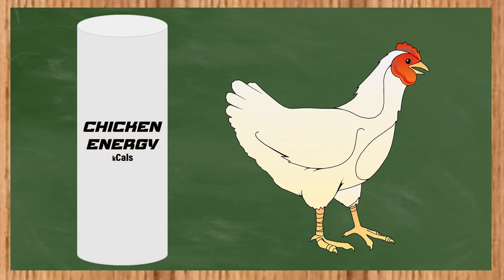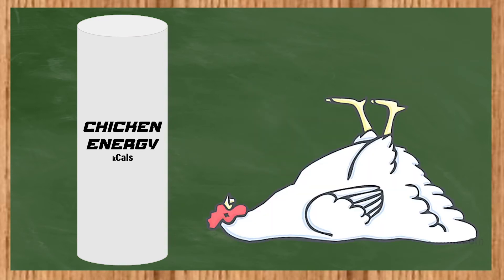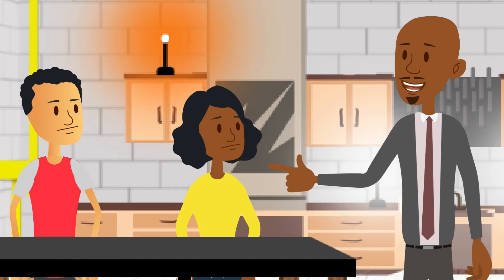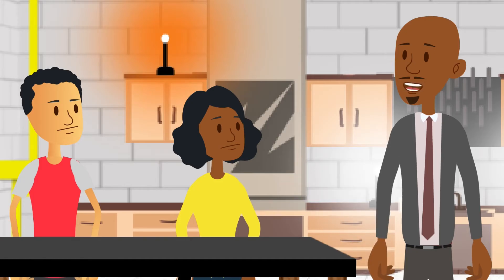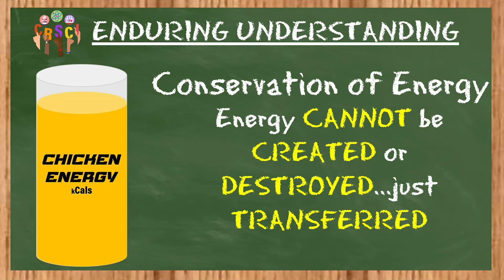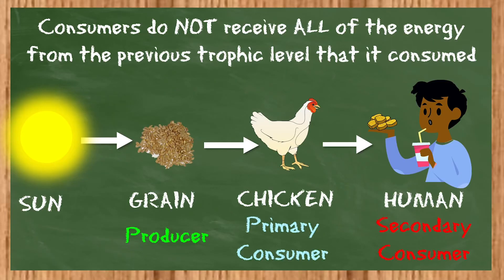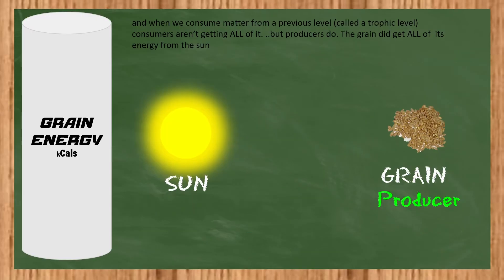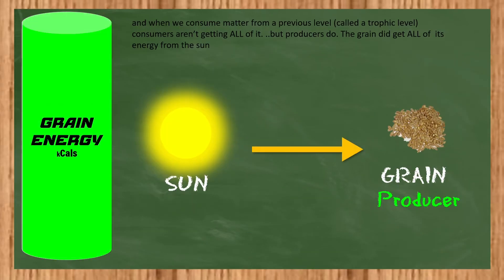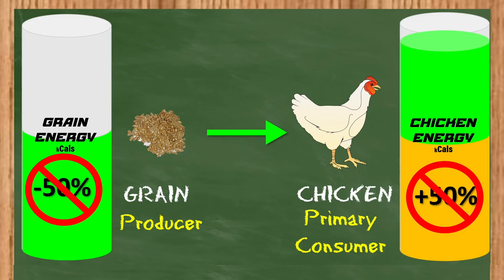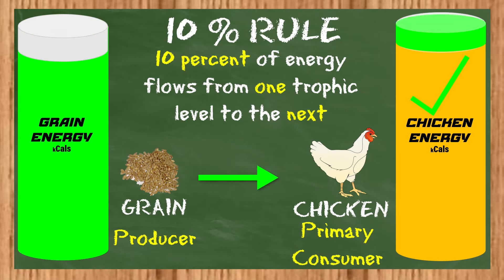If chickens got their energy from the grain and used their energy to live their best chicken life, how are we getting energy from them when they're dead by the time they get to us? Well, one very important topic: energy can't be destroyed and it can't be created — it's the law of conservation. When we consume matter from a previous trophic level, we aren't getting all of it. The chicken only got 10% of the energy from the grain.